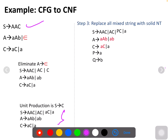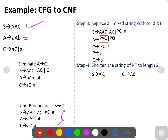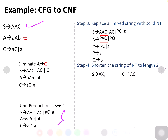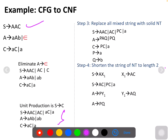So now we have PC, and some productions are still not in CNF form. To shorten the string of non-terminals to length two, I introduce a new variable X1 where X1 gives AC. You replace that throughout, and then you can see all of them are in CNF — Chomsky Normal Form. This is how you do the conversion.